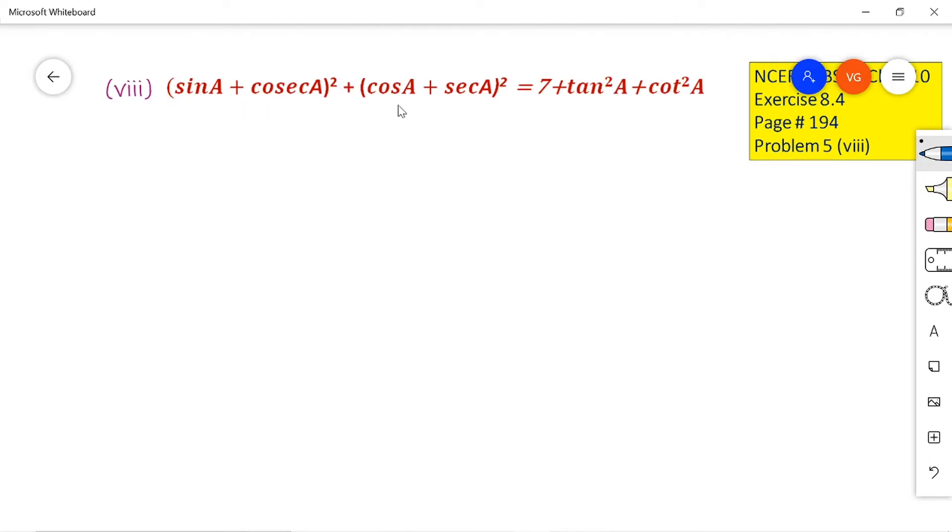This is like a plus b whole square. Again, this is also of the form a plus b whole square. Just try to simplify, expand both the terms and then simplify. You will get it very easily.